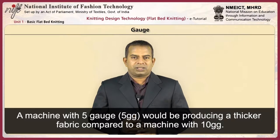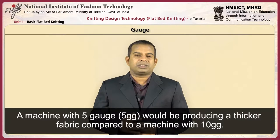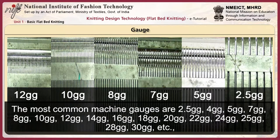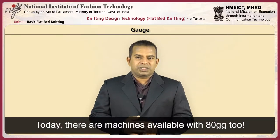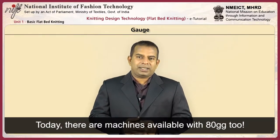A machine with 5 gauge would produce a thicker fabric compared to a machine with 10 gauge. The most common machine gauges are 2.5, 4, 5, 7, 8, 10, 12, 14, 16, 18, 20, 22, 24, 25, 28, 30, and more. Today, there are machines available with 80 gauge also.